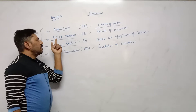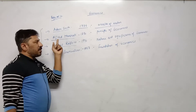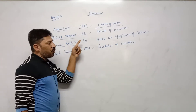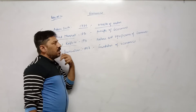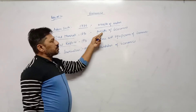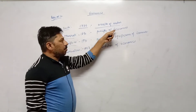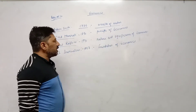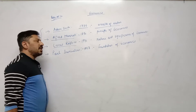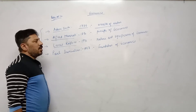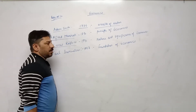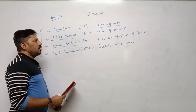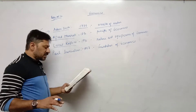Similarly, Alfred Marshall published his book Principles of Economics in the year 1890. One-mark questions or MCQ questions may come in this way. Page number two is completed.